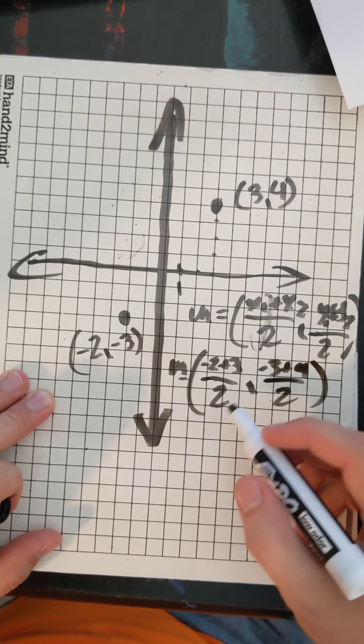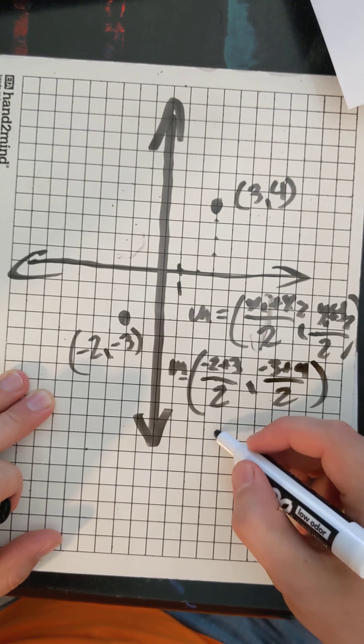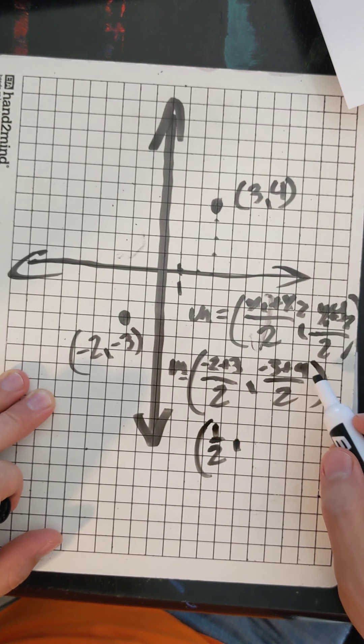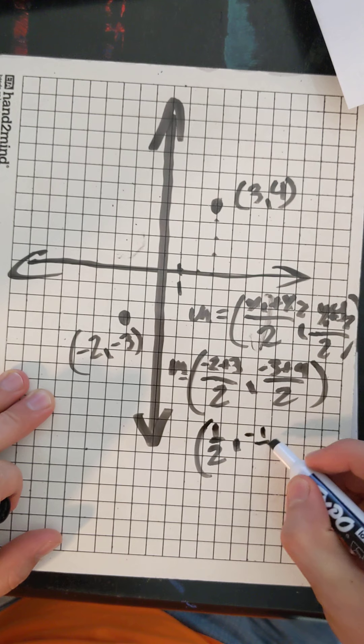Negative 2 plus 3 is 1. Divided by 2 is 1 half. Negative 3 plus 4 is negative 1. Divided by 2 is negative 1 half.